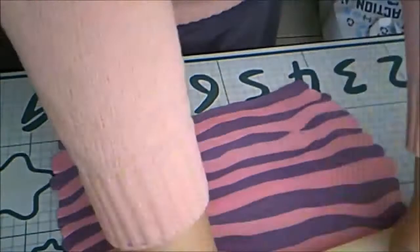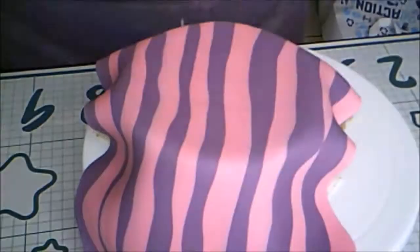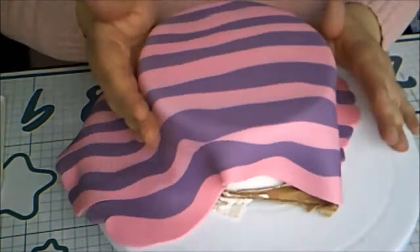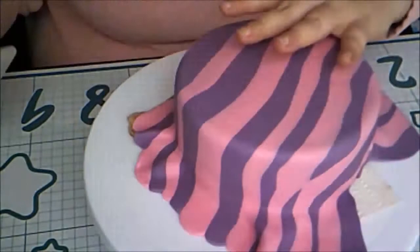Then I rolled out the striped fondant. This should remind you of the Cheshire Cat. I covered the cake with the striped fondant and smoothed it on the best I could. It was a bit difficult because it was slightly short on the sides, but I think we can cover that with decorations.